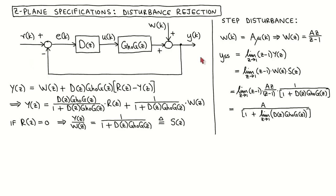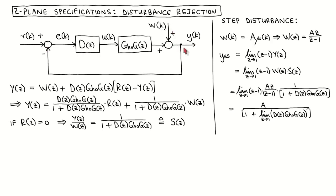Consider this block diagram of a discrete-time control system with equivalent discrete-time plant model GHO G, controller D, reference input R, measured plant output Y, and disturbance signal W that acts on the plant output before it is measured.